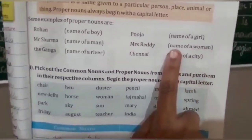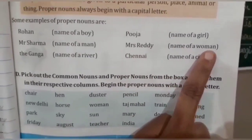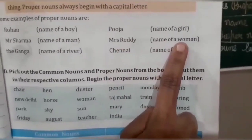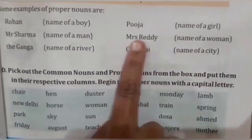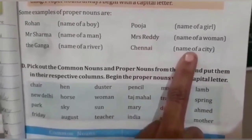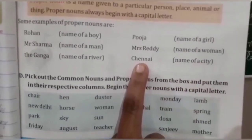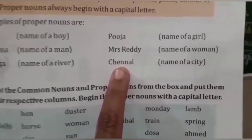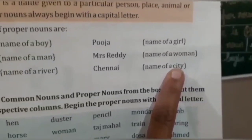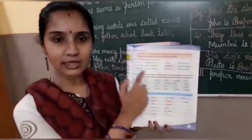Name of a woman: Mrs. Reddy. Woman is a common noun, and Mrs. Reddy is a proper noun. Name of a city: Chennai. City is a common noun, and Chennai is a proper noun. Always the proper noun begins with a capital letter.